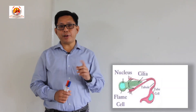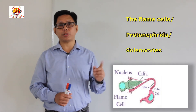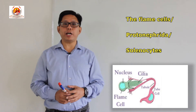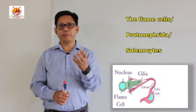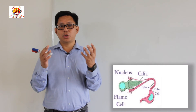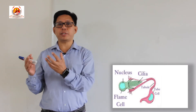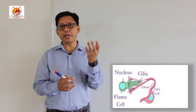The next important character is that excretion as well as osmoregulation is carried out by the flame cells. The flame cells are also known as protonephridia or solenocytes. They are called flame cells because the cilia of these cells flicker like fire, and so the name flame cells was given based on this flickering nature.